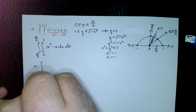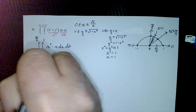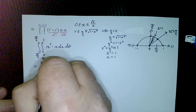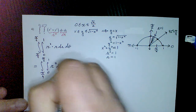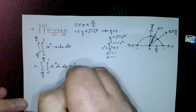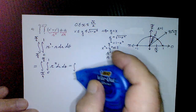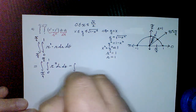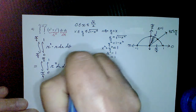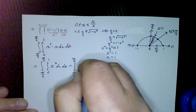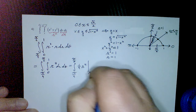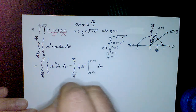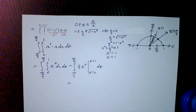Evaluating: the inner integral of r³ dr from 0 to 1 gives (1/4)r⁴ evaluated from 0 to 1, which is just 1/4. Bringing 1/4 out front, we have (1/4) times the integral from π/4 to π/2 of 1 dθ.